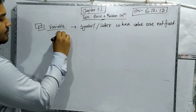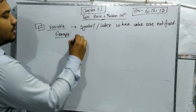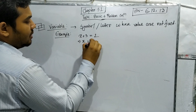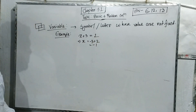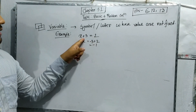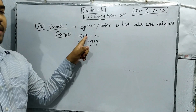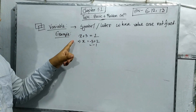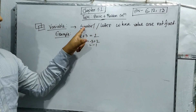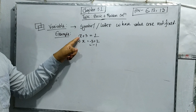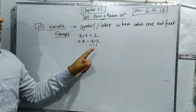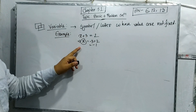For example, suppose x plus 3 equals 2, so x equals 2 minus 3, which is minus 1. Here, 2 and 3 are digits whose values are fixed. But x is the unknown part — it looks like a symbol or letter whose value is not fixed. We don't know what the value is, and that value can change. So x is our unknown, and that is called the variable.